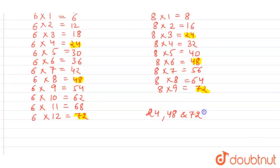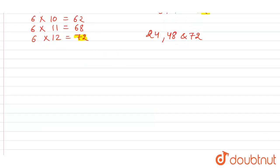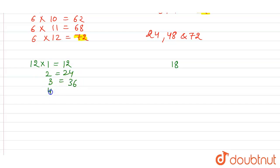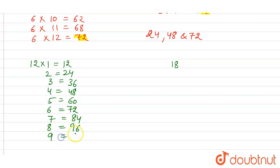Similarly for 12 and 18, let's write the multiples of 12 and 18. The first 10 multiples of 12 are: 12 × 1 = 12, 12 × 2 = 24, 12 × 3 = 36, 12 × 4 = 48, 12 × 5 = 60, 12 × 6 = 72, 12 × 7 = 84, 12 × 8 = 96.